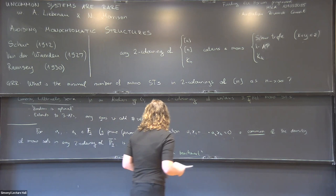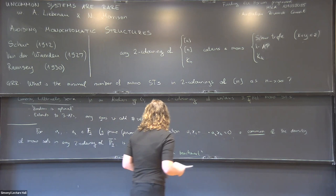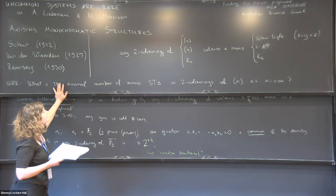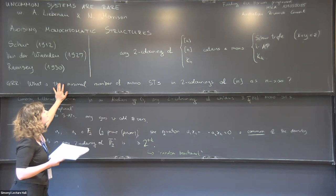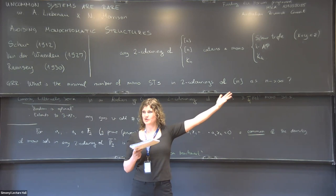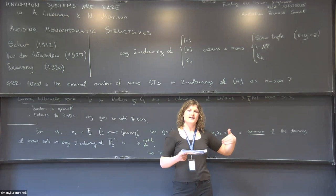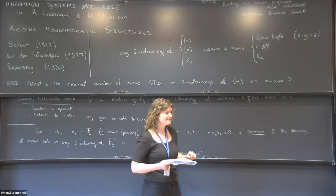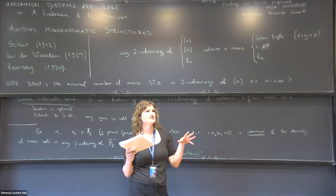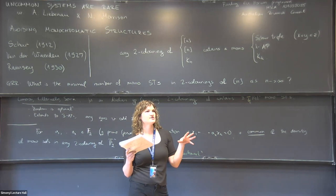Motivation: this was motivated by initial examples and by equivalent problems for graphs. For graphs, the proportion of monochromatic triangles was first studied — triangles are common by Goodman's theorem. Erdős conjectured this extends to all cliques, but Thomason disproved it around 20 years ago by showing K_4 is not common. The characterization of common graphs is a big line of research in graph theory, and you can ask the same natural questions for arithmetic progressions.